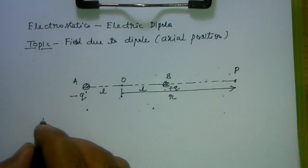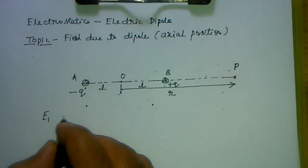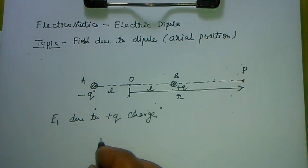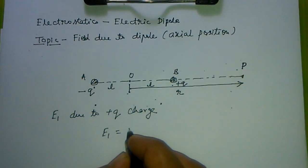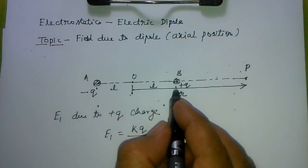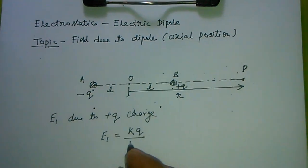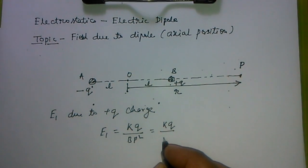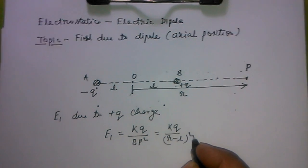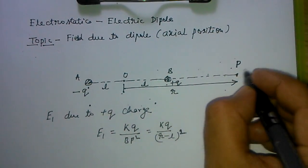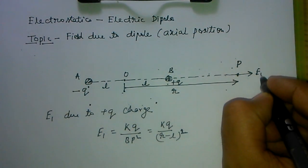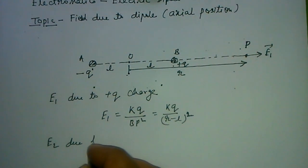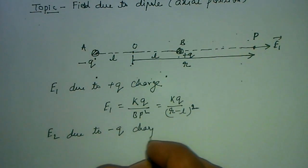First, the electric field at P due to the plus Q charge: E1 equals KQ divided by BP squared. The distance BP is (R minus L), so E1 equals KQ upon (R minus L) whole square. Since the charge is positive, the field is directed away from the charge.